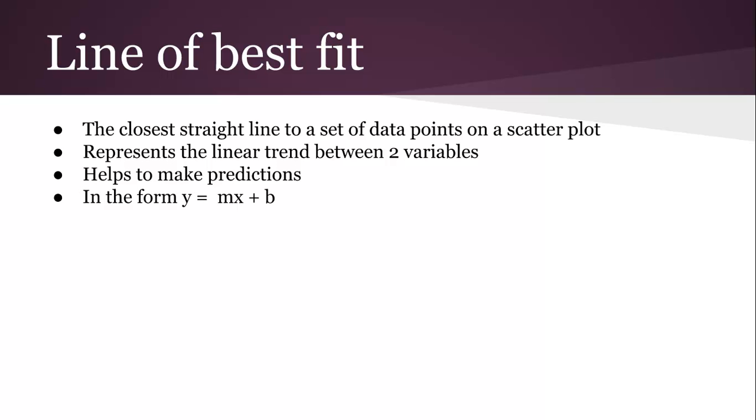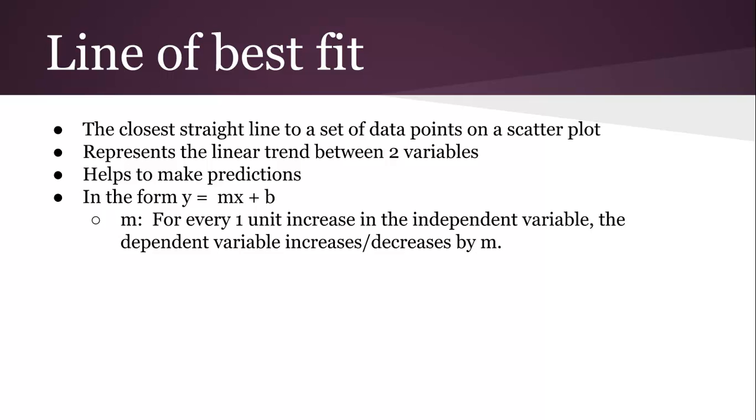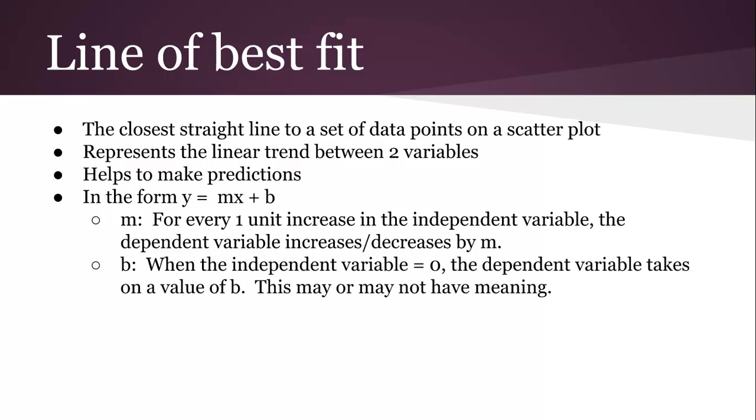It represents a linear trend between the two variables and helps to make predictions like we've seen already. It's in the form y equals mx plus b. Here's really the explanation: the slope is for every one unit increase in the independent variable, so we had for one unit increase in age, the dependent variable increases or decreases by the slope. B is when the independent variable is zero, so if the age is zero, we've got a height of 62. The dependent variable takes on a value of b.